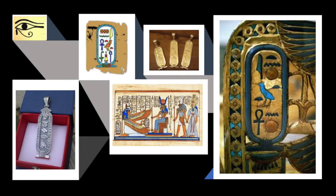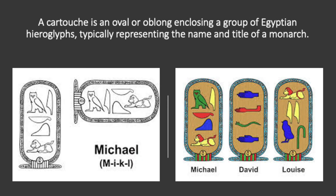When you look at these pictures you can see some hieroglyphs. Some of the hieroglyphs are in an oval shape — that's called a cartouche. A cartouche is an oval or oblong enclosing a group of Egyptian hieroglyphs, typically representing the name and title of a monarch.